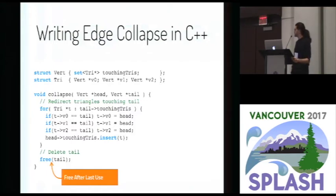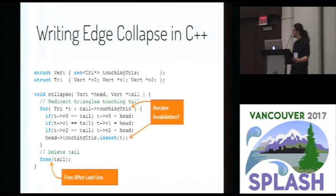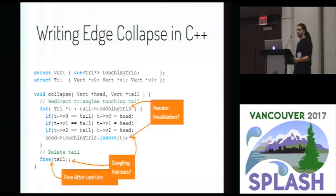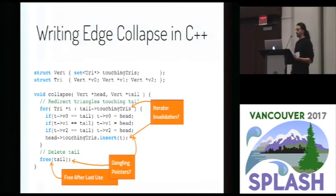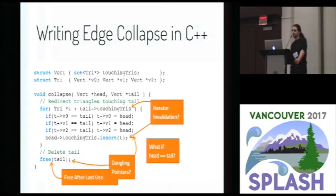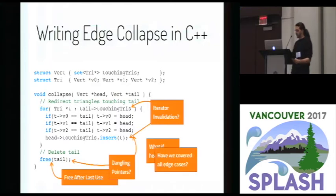Besides ordering, we also need to care about memory safety — making sure we don't delete the same element twice or leave a dangling pointer to a deleted element. For all of these issues — keeping auxiliary data structures in sync, ordering, and memory safety — it's easy to write code that is almost always correct except for certain edge cases that are hard to find. Even this tiny program has an edge case: if the head equals the tail and we run the program on such an input, we will cause both iterator invalidation and a dangling pointer bug. Without formal guarantees, we can never be sure we've covered all edge cases or considered all possible failure scenarios.